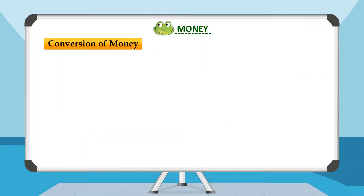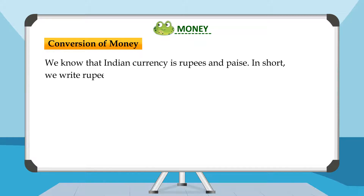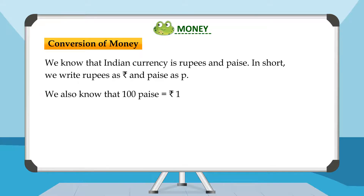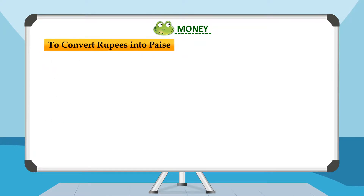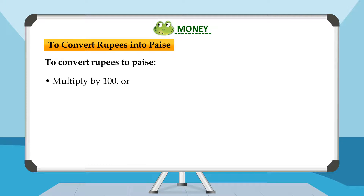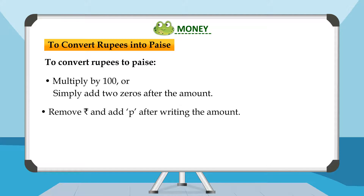Conversion of Money. We know that Indian currency is rupees and paise. We write rupees as ₹ and paise as p. We also know that 100 paise is equal to rupee 1. Therefore, 1 paise is equal to rupees 1 upon 100, which is equal to 0.01 rupee. To convert rupees into paise, multiply by 100 or simply add two zeros after the amount. Remove the rupee symbol and add 'p' after writing the amount.